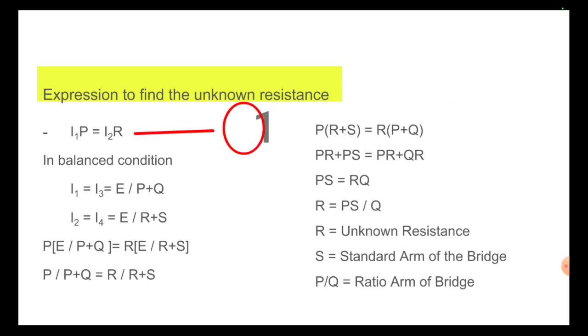Then substitute the value of I1 and I2 in expression 1, it becomes P of E by P plus Q is equal to R of E by R plus S. Then E and E on the right hand side and the left hand side are cancelled. Then the equation becomes P by P plus Q is equal to R by R plus S.